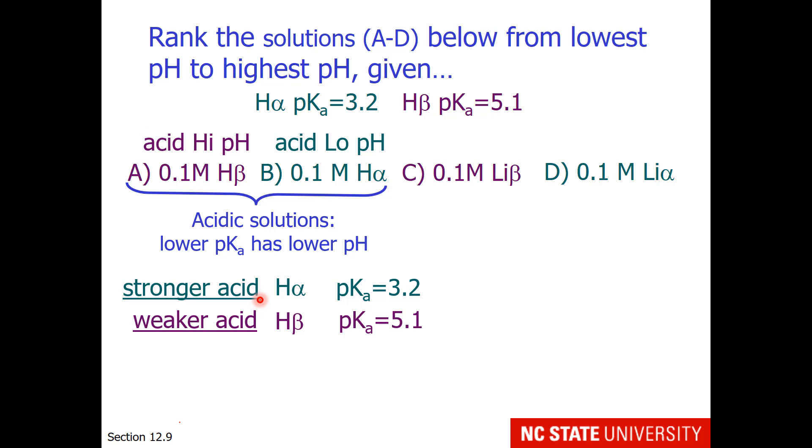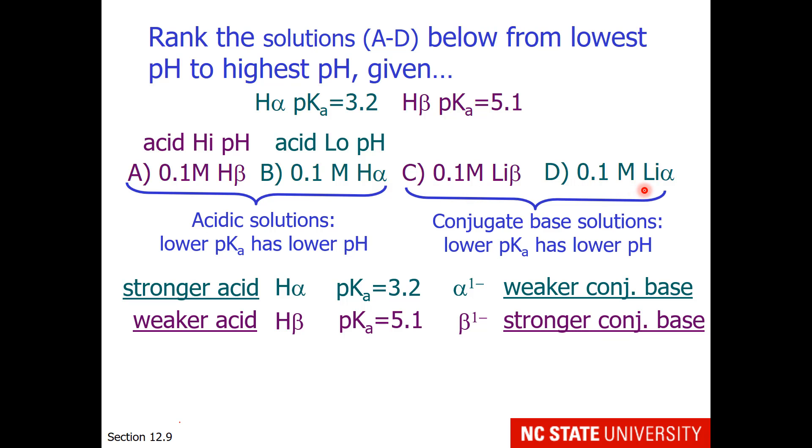Now a word about conjugates. The stronger acid has the weaker conjugate base, and the weaker acid has the stronger conjugate base. So our conjugate base solutions will be above pH 7. Which one has a lower pH? The one with weaker base or stronger base? Well, I hope you say to yourself, the weaker base makes less hydroxide. So the lithium salt of acid alpha is going to have the lower pH, which is still above 7. And the lithium salt of acid beta is going to have the higher pH.